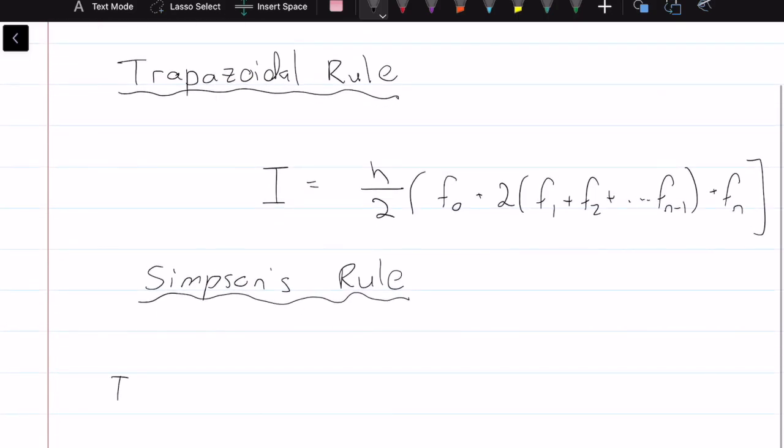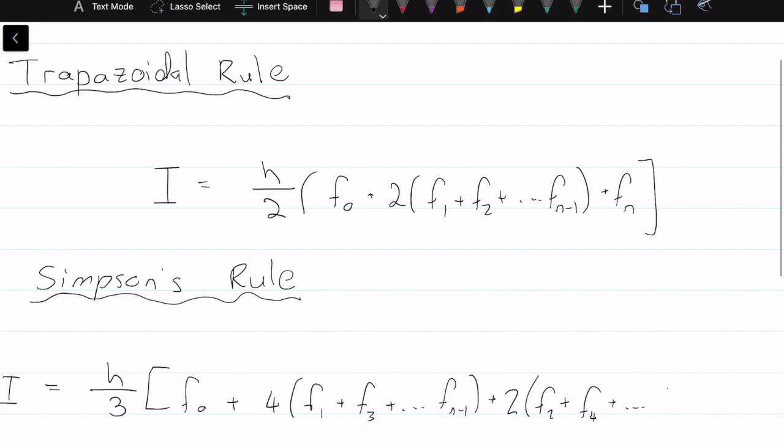For the Simpson's rule, the integral I is equal to h over 3 times f0 plus 4 times f1 plus f3 plus dot dot dot f of n minus 1 plus 2 times f of 2 plus f of 4 plus as many f of n minus 2 plus f of n.